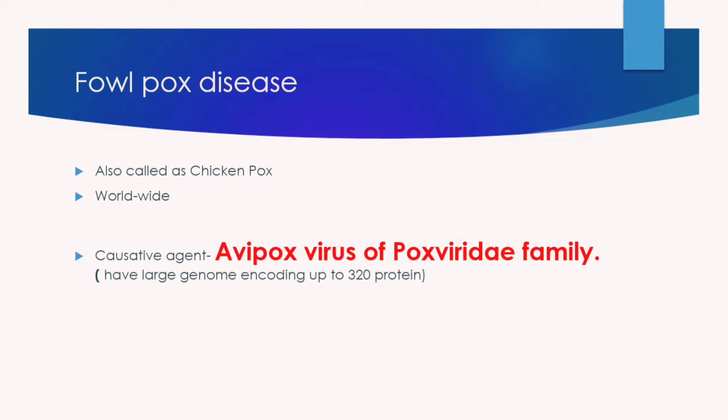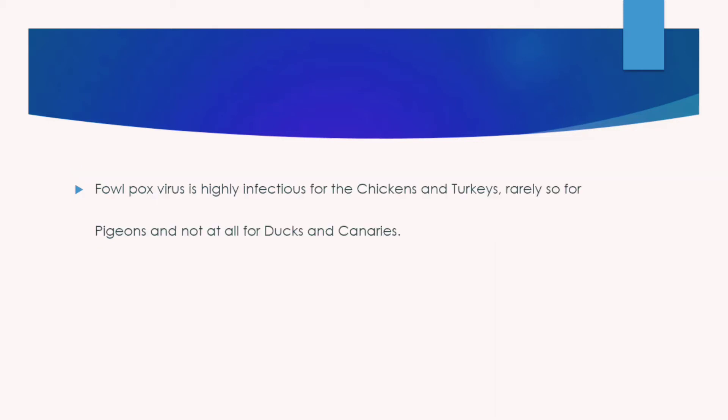The causative agent of fowl pox or chicken pox is the avipox virus of the Poxviridae family. The Poxviridae family has a large genome encoding up to 320 proteins. Fowl pox virus is highly infectious.